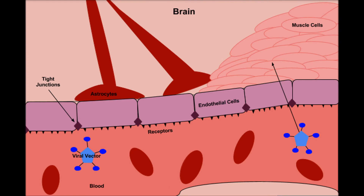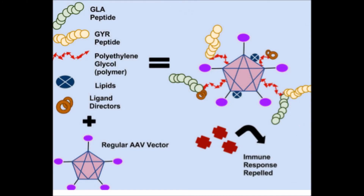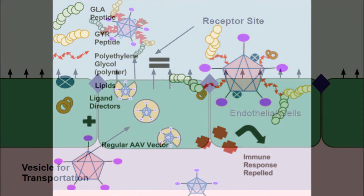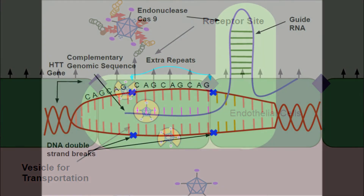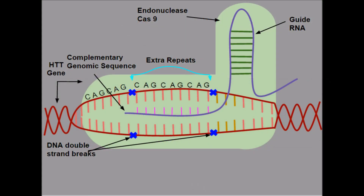The new viral vector would need to be created by combining properties of various vectors through pseudotyping. This would have specific envelope proteins to correspond with receptor sites on the blood-brain barrier. The vector would then gain entry into the brain through receptor-mediated endocytosis.